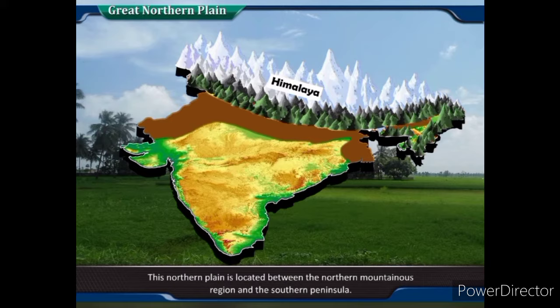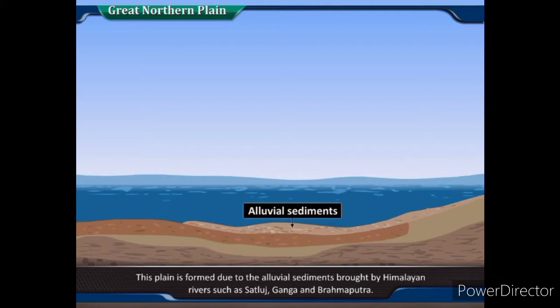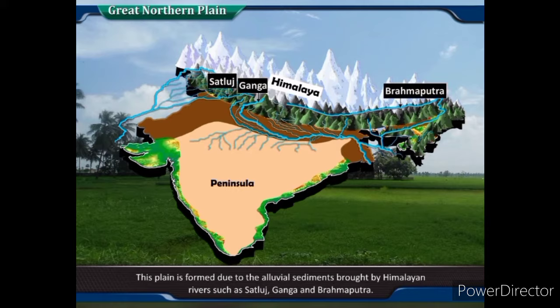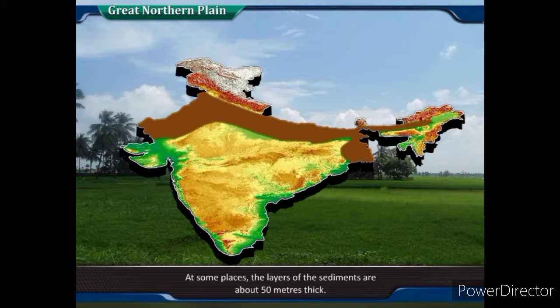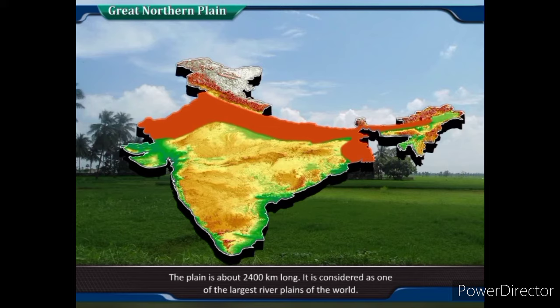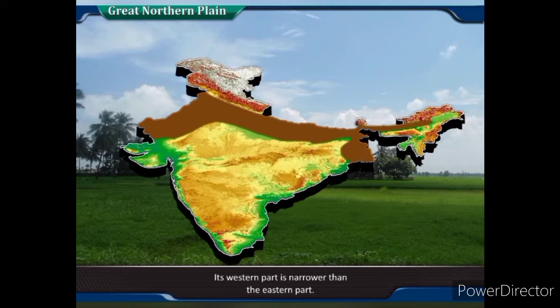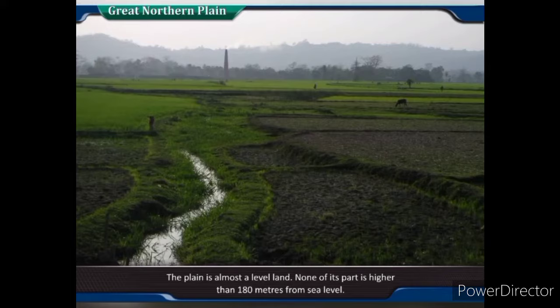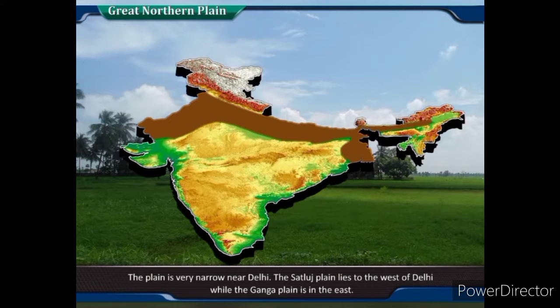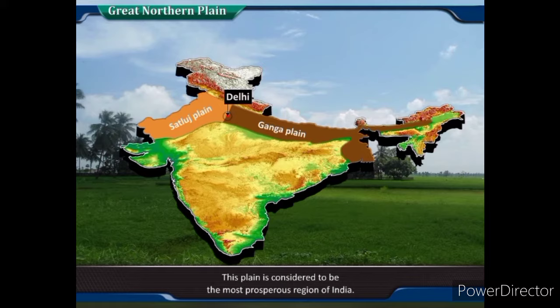Great Northern Plain: This northern plain is located between the northern mountainous region and the southern peninsula. It is formed due to the alluvial sediments brought by Himalayan rivers such as Satlaj, Ganga and Brahmaputra. At some places, the layers of sediments are about 50 meters thick. As these plains occupy a very large area in North India, they are known as the Great Plains of Northern India. The plain is about 2,400 km long and is considered one of the largest river plains of the world. Its western part is narrower than the eastern part, and none of its parts is higher than 180 meters from sea level. The plain is very narrow near Delhi; the Satlaj plain lies to the west of Delhi, while the Ganga plain is in the east.